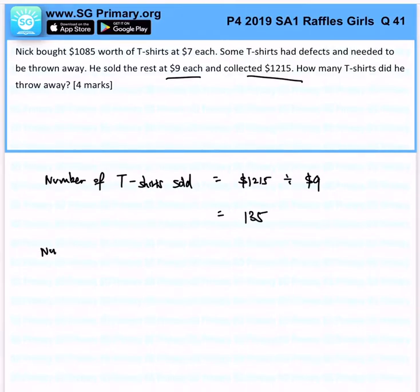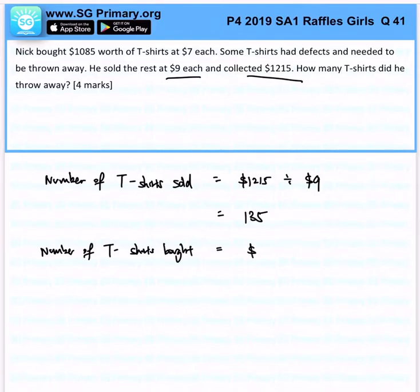Next, number of t-shirts bought. That is $1,085 divided by $7, and that will be 155 t-shirts.